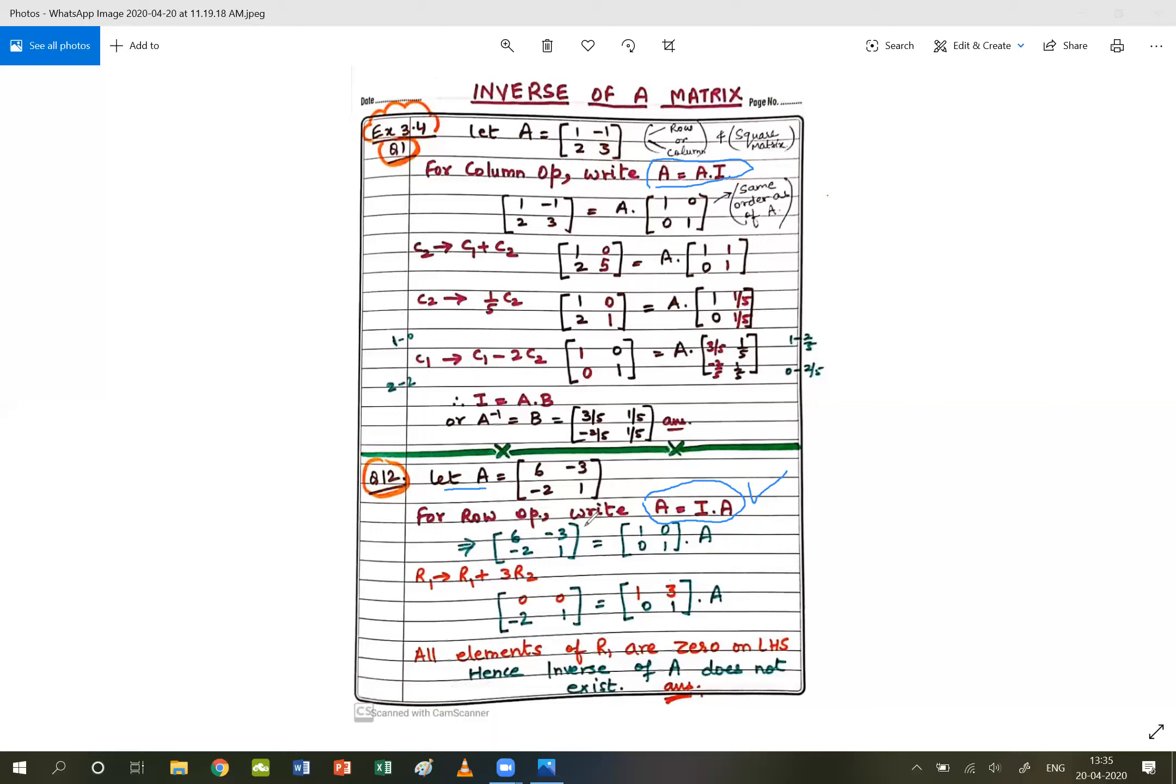Now, row operations will be on the row elements. 6 and -3 are first row which we have to convert into 1 and 0. Now, with second row we have to do this operation.